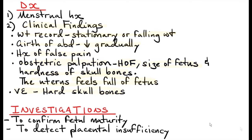On obstetric palpation, the height of fundus might seem big, and the size of the fetus might seem like a big baby. When you do a vaginal examination, you can find hard skull bones through the cervix.